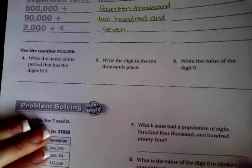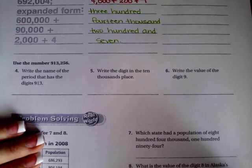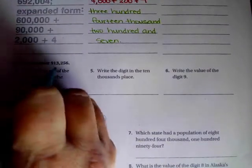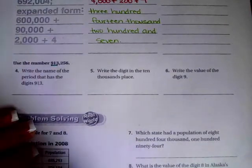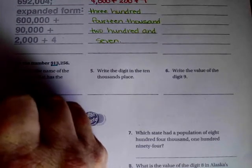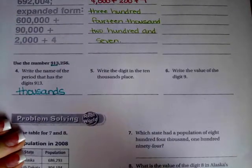Number four says to write the name of the period that has the digits nine one three. So that's these guys up here. Those are the thousands.